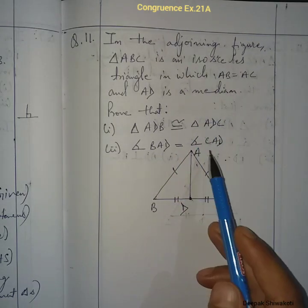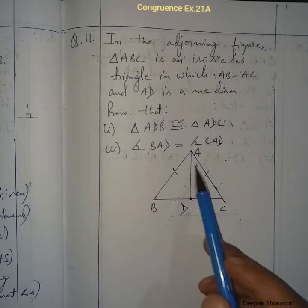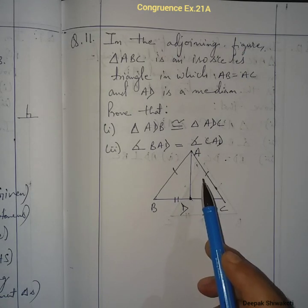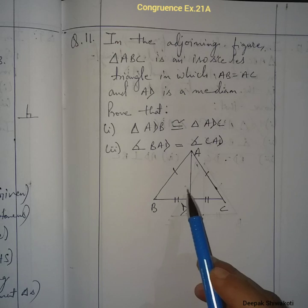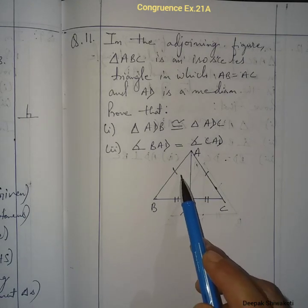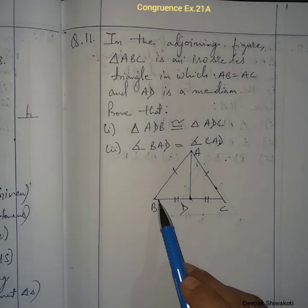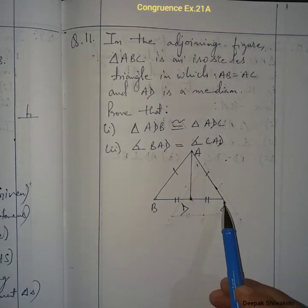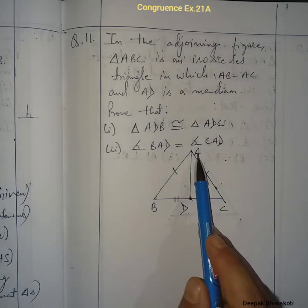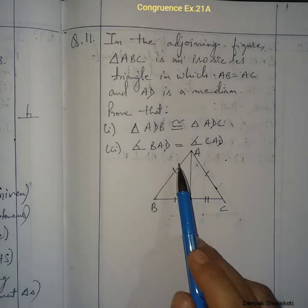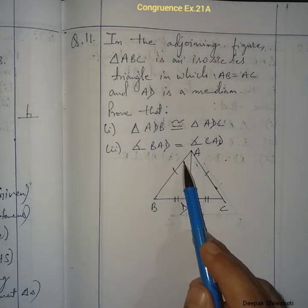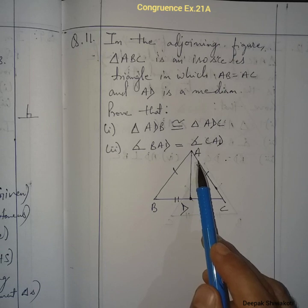In this triangle, AB equals AC. AD is a median, meaning it divides the figure into two triangles. AD is common to both triangles. We have to prove that triangle ADB is congruent to triangle ADC.